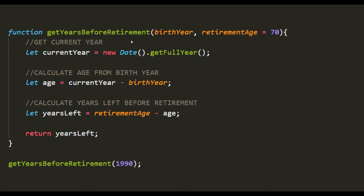Here we have the same function. Now, for retirementAge, we are setting a default value using the assignment operator — a default value of 70. When we call getYearsBeforeRetirement and pass only one argument, 1990 is assigned to birthYear. Since we are not passing any value for retirementAge, it will be assigned that default value of 70, and the calculation will use that value.